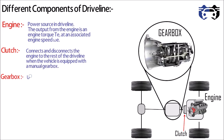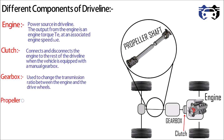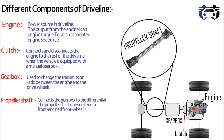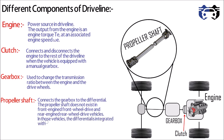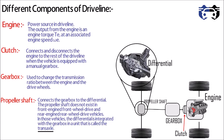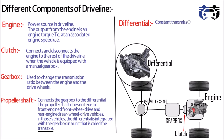Third is the gearbox — it is used to change the transmission ratio between the engine and drive wheels. Fourth is the propeller shaft — it connects the gearbox to the differential. The propeller shaft does not exist in front-engine front-wheel-drive and rear-engine rear-wheel-drive vehicles. In those vehicles, the differential is integrated with the gearbox in a unit called the transaxle.